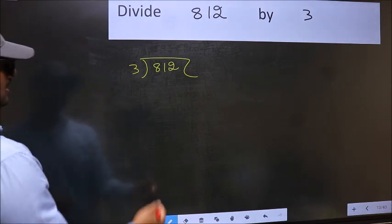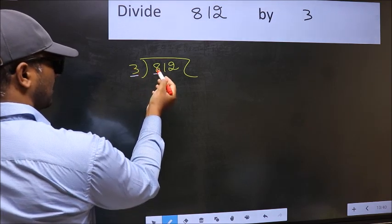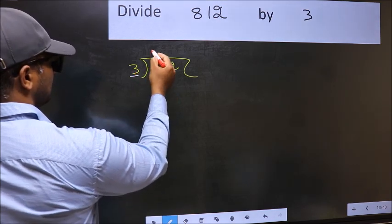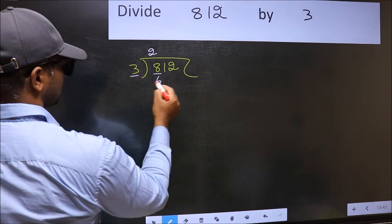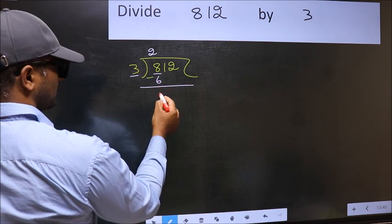Next, here we have 8 and here 3. A number close to 8 in 3 table is 3 times 2, 6. Now you should subtract 8 minus 6, 2.